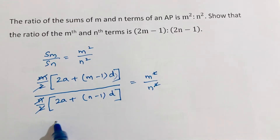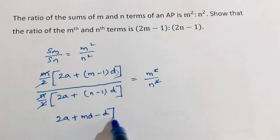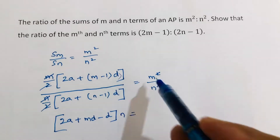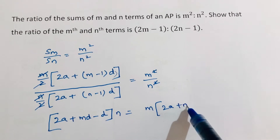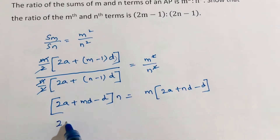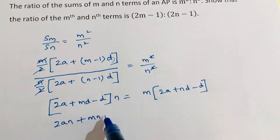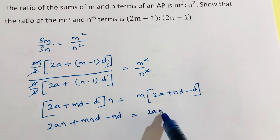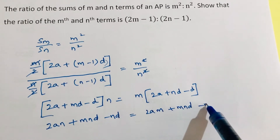Write: 2a plus md minus d into n equals m into 2a plus nd minus d. Multiplying out: 2an plus mnd minus nd equals 2am plus mnd minus md.